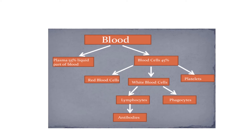Our red blood cells have a biconcave shape, which gives them a much larger surface area. Because their surface area is larger than any other blood cells, they can carry more oxygen.